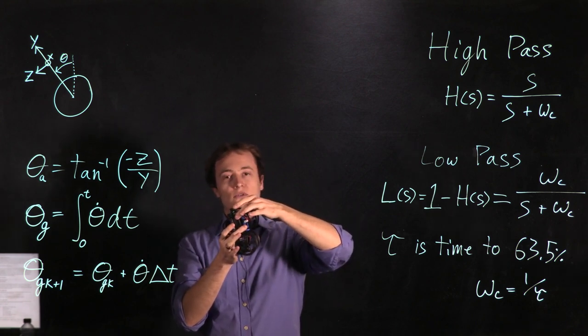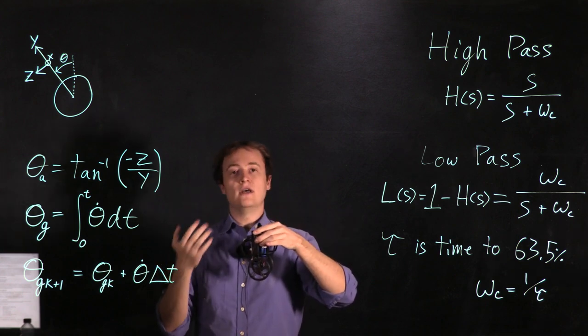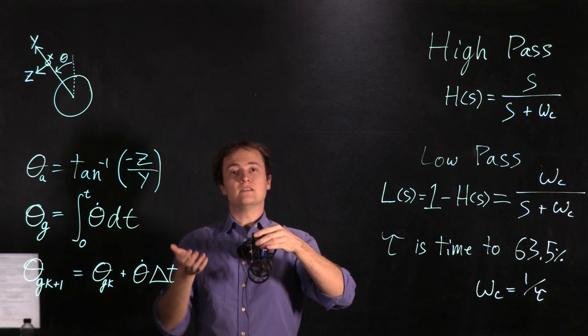As the MIP tips forward slightly the z direction is going to start pointing downward and so that's going to measure an increasingly negative number.